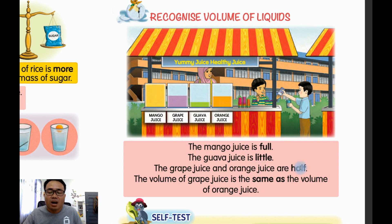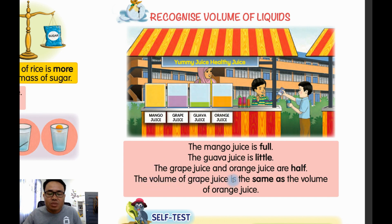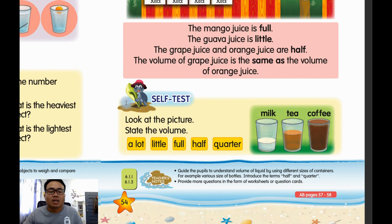Now look at the grape juice and orange juice — they are half. This is half. The volume of the grape juice is the same as the volume of the orange juice. This is same.